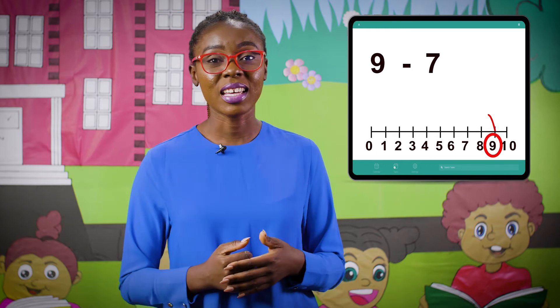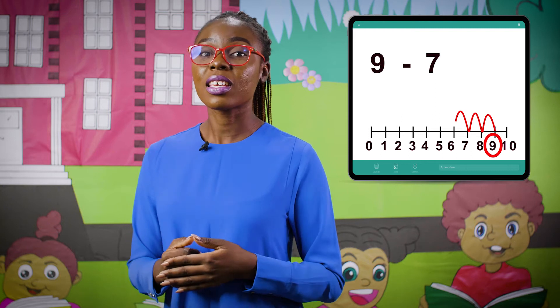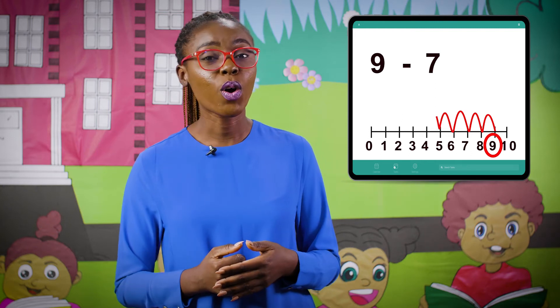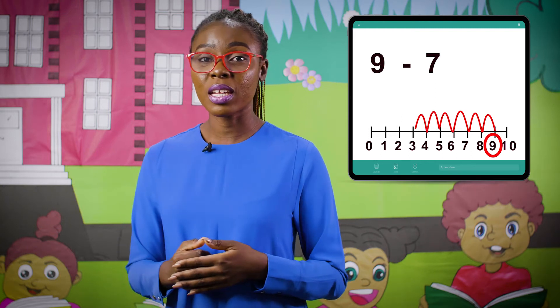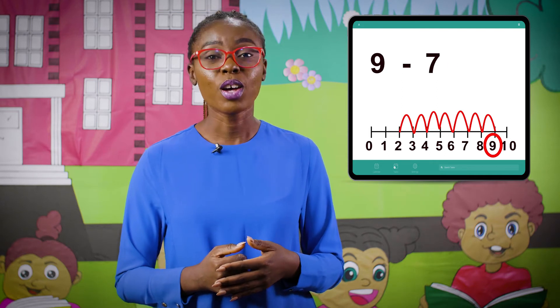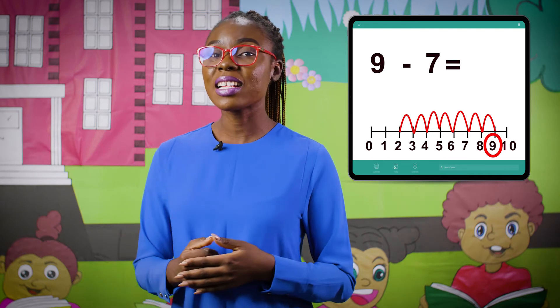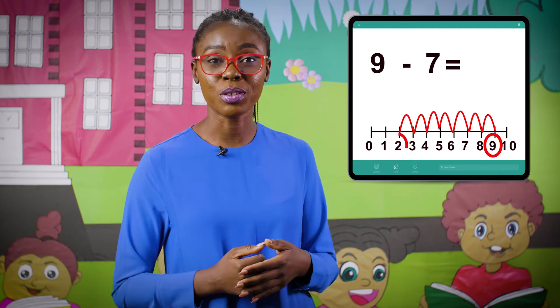Nine, eight, seven, six, five, four, three, two. So nine take away seven gives us two.